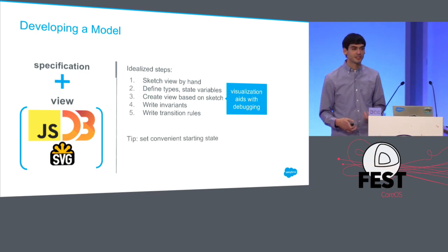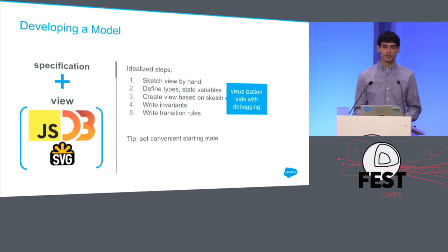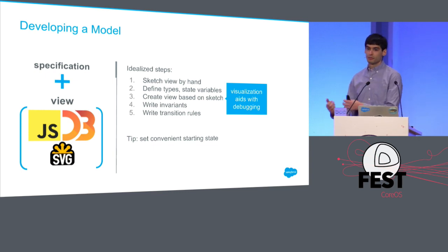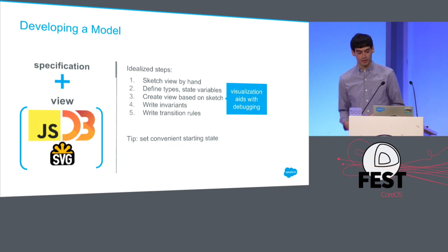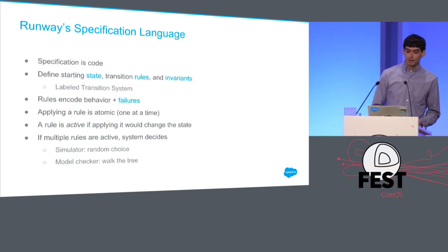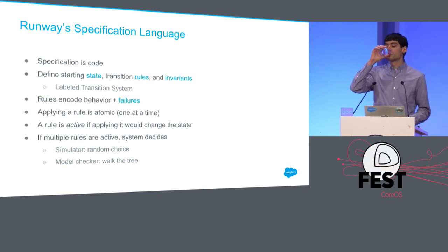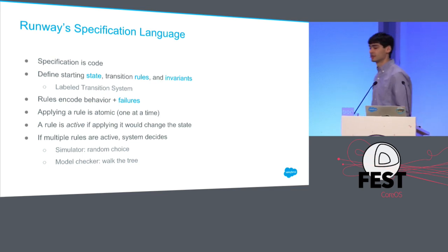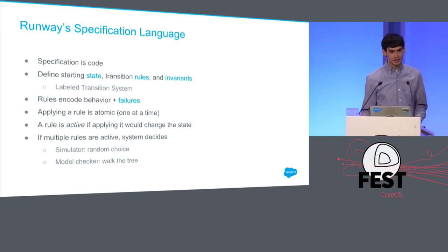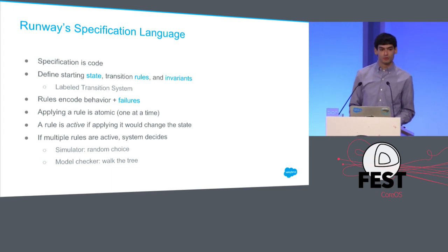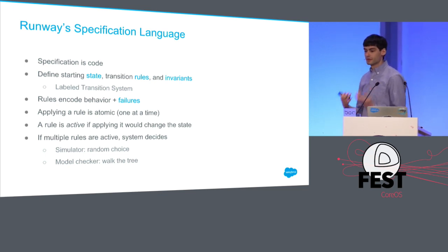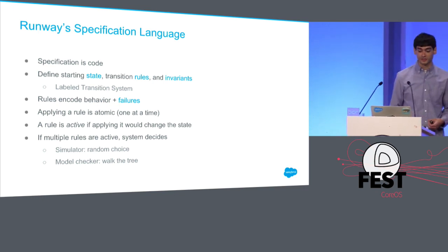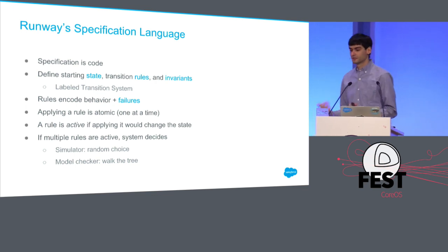What does the specification language look like? First, it is code — interpreted by Runway. But it's not the same as writing in a production programming language. It's a much more limited environment because we're trying to leave out unnecessary features. You define a starting state, transition rules, and invariants that are properties on your state. This is called a labeled transition system — but it's pretty much a state machine.